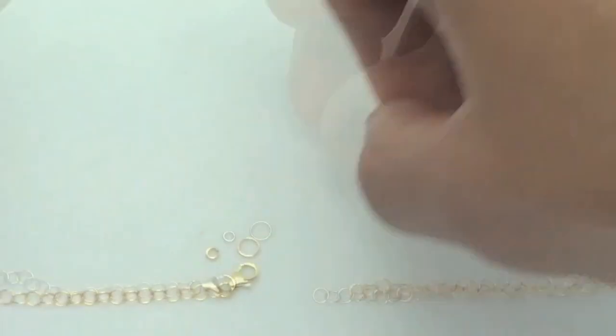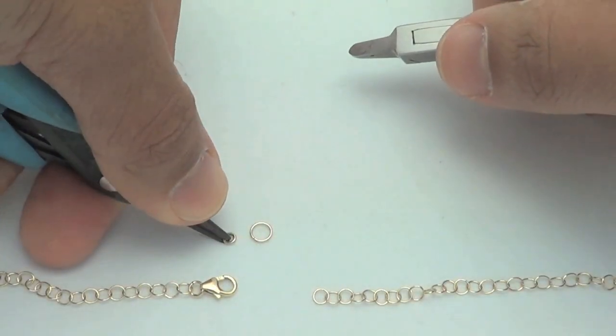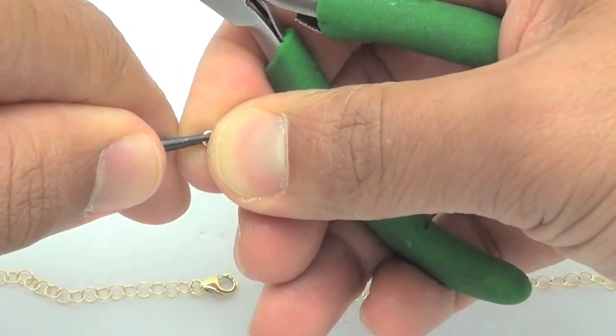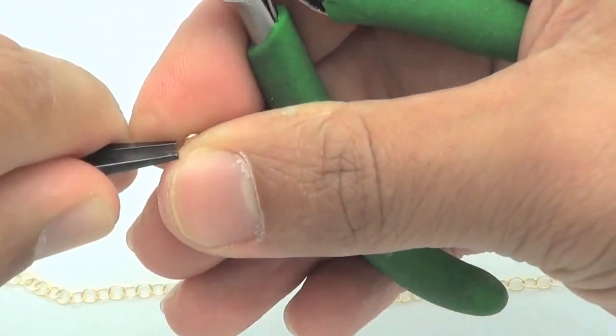Easy, right? Okay, let's do the other side. This jump ring is a bit smaller so it might be tricky at first, but the technique is still the same.